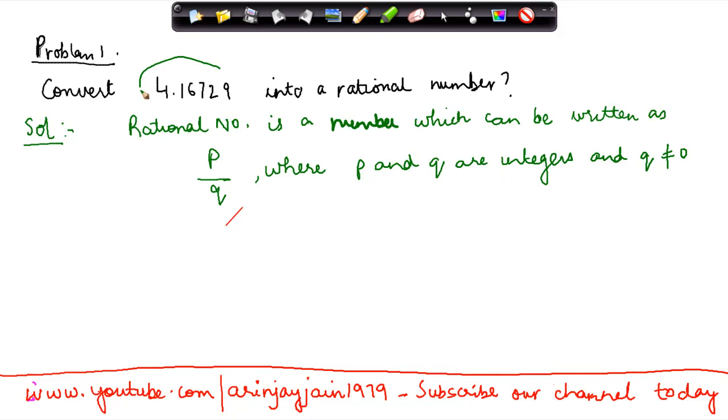Now, if I have to write this number 4.16729 as a fraction, the easiest way to do that is to divide this number by 1.